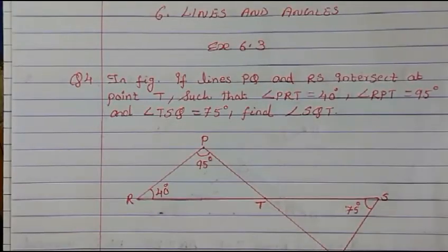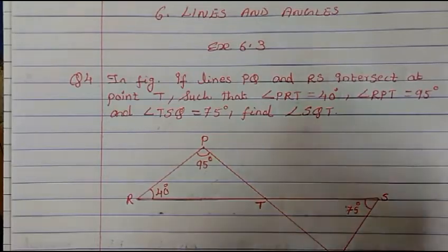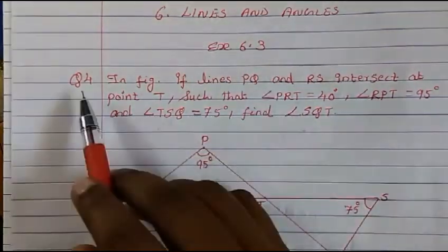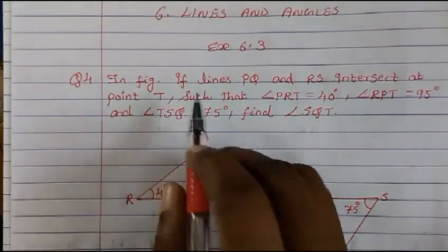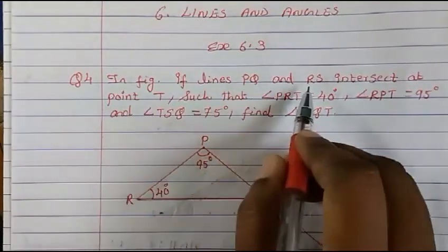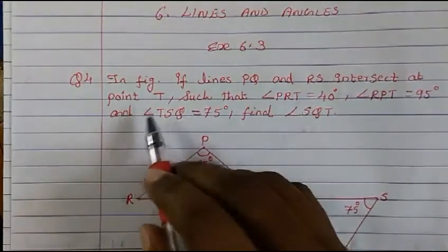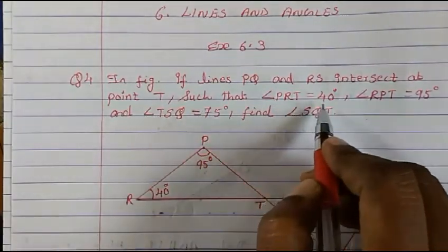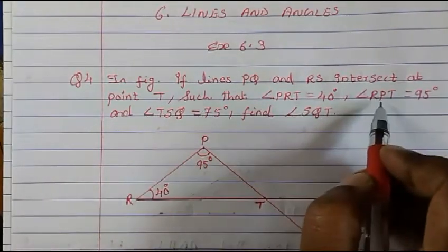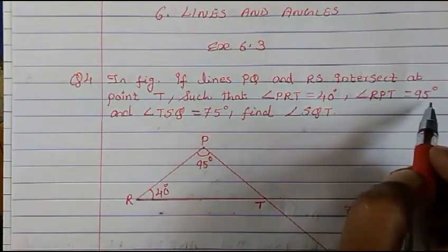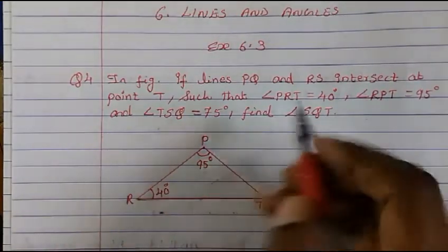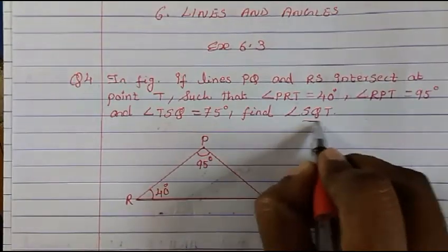Hi everyone, welcome to Mash Map. Today we are going to study from Chapter 6 Lines and Angles, Exercise 6.3, Question 4. In the figure, if lines PQ and RS intersect at point T such that angle PRT is equal to 40 degrees, angle RPT is 95 degrees, and angle TSQ is equal to 75 degrees, find angle SQT.